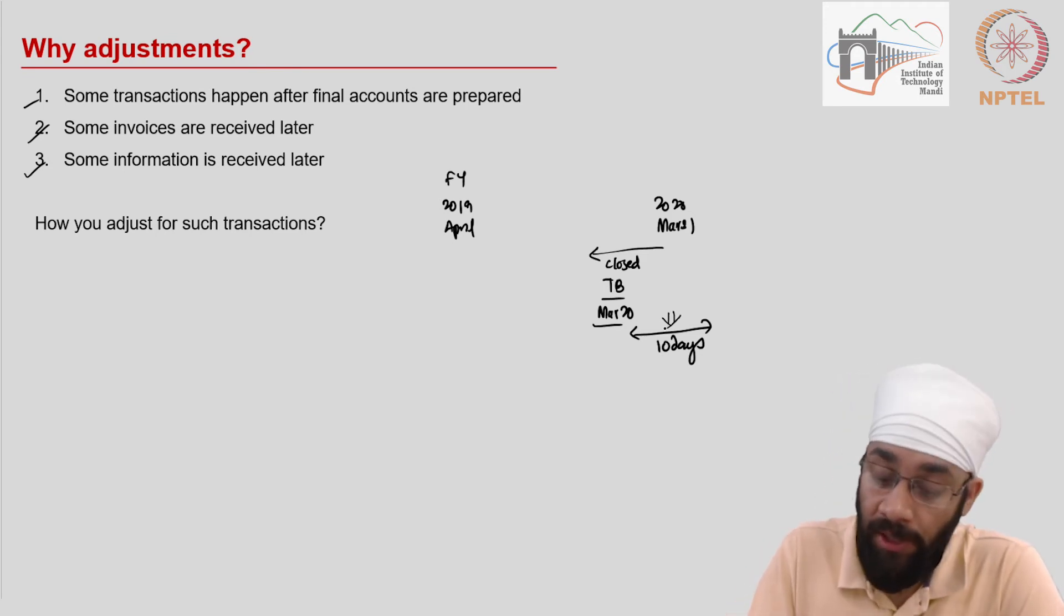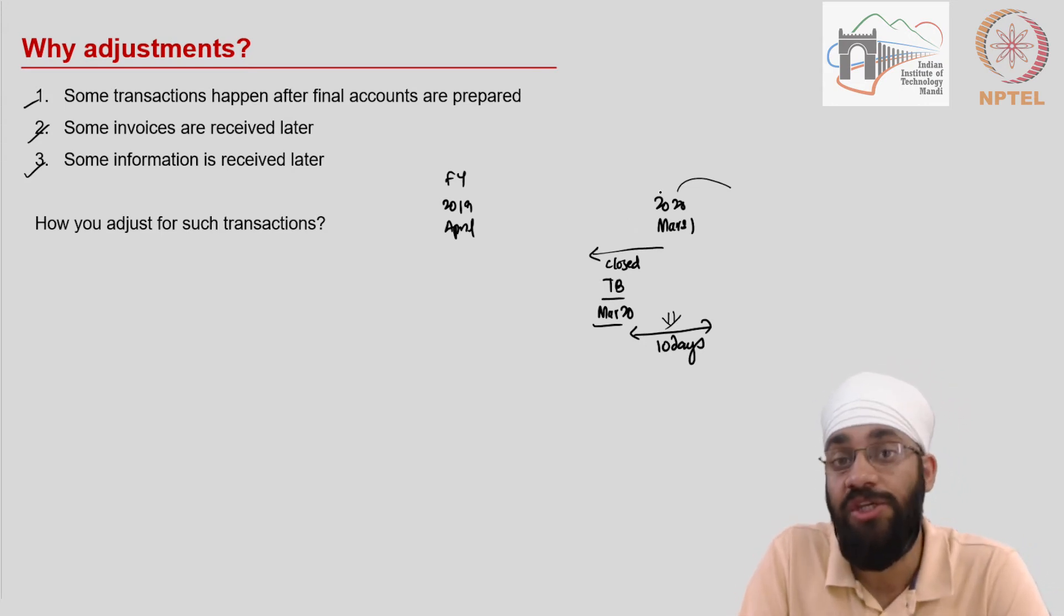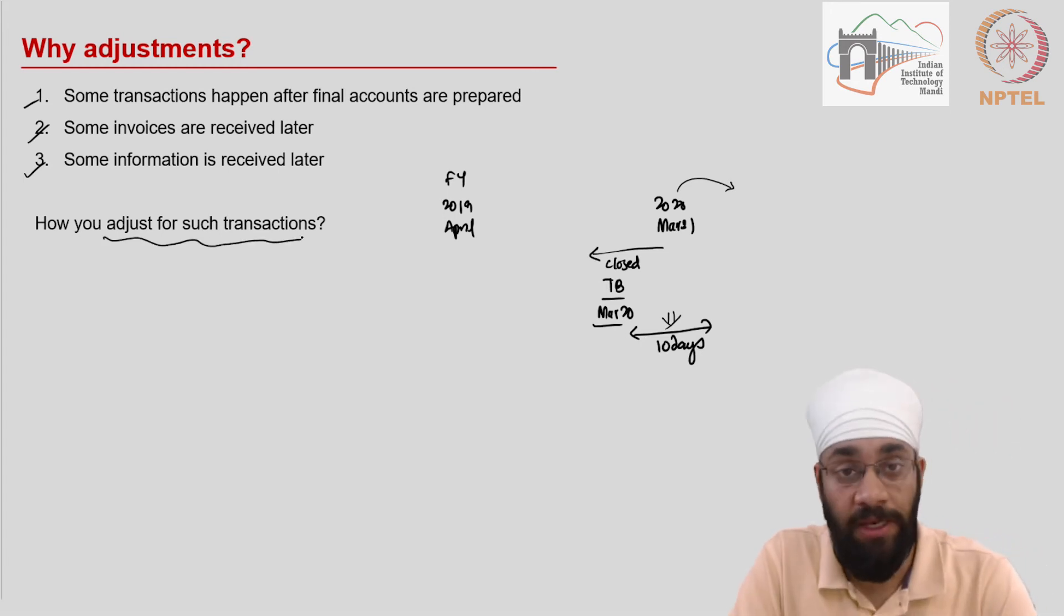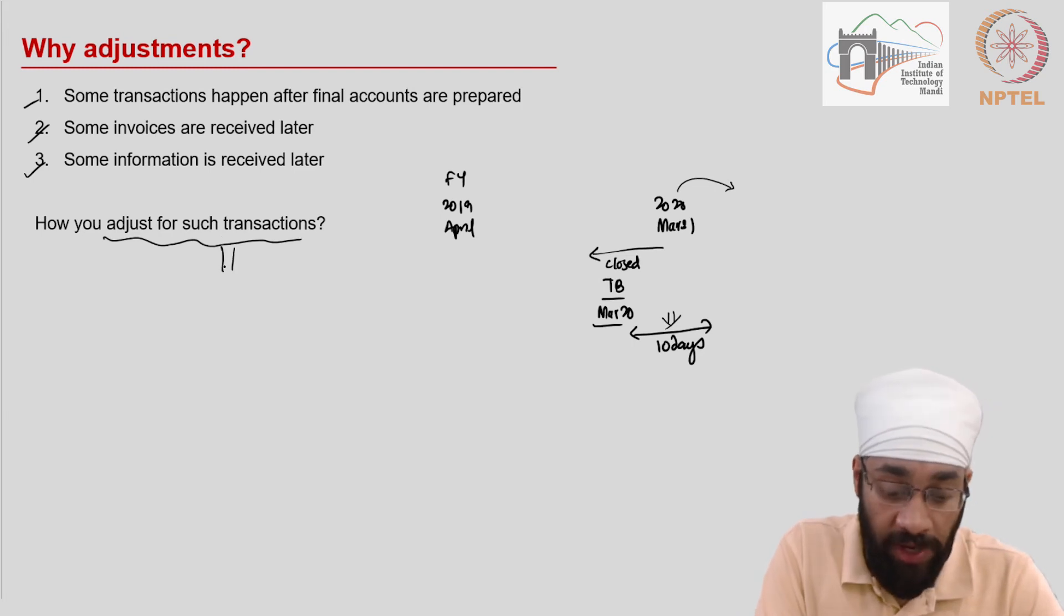It is also possible that you receive some information after March 31st. You have done the transaction but invoices are received much later. Then retrospectively you have to do some edits as well. All such transactions have to be adjusted in the final accounts, and the way to adjust remains the same. We follow the same principles of double entry system.